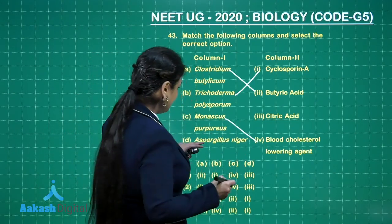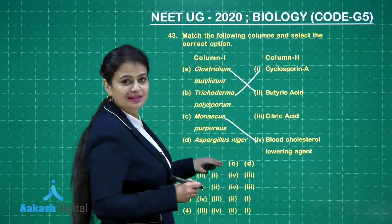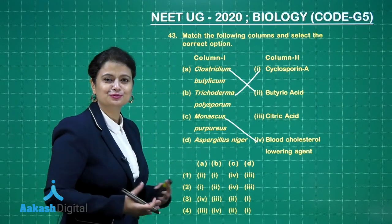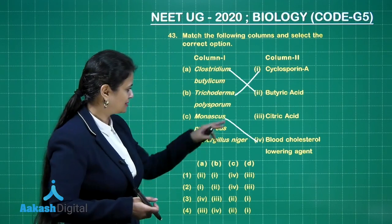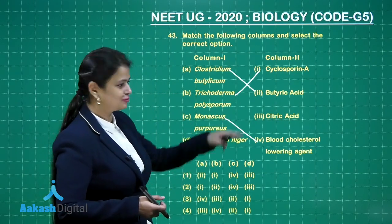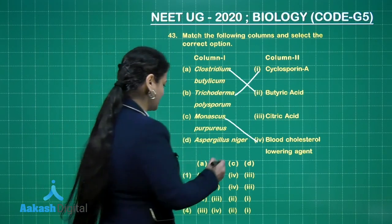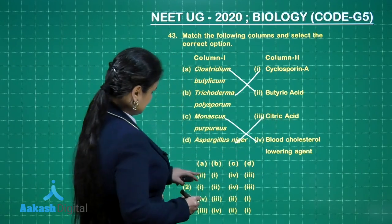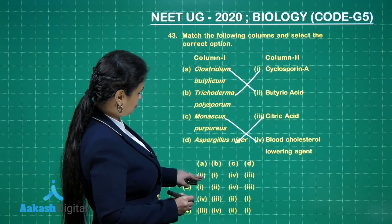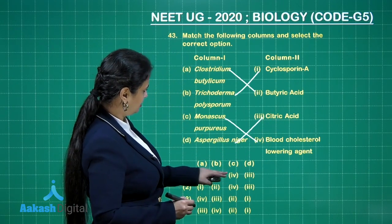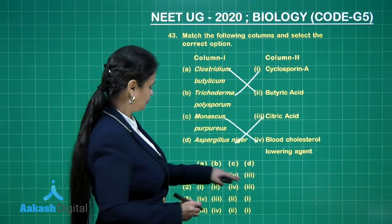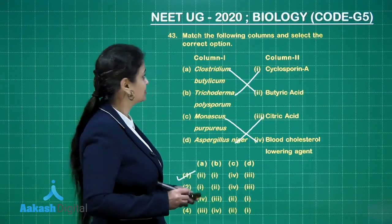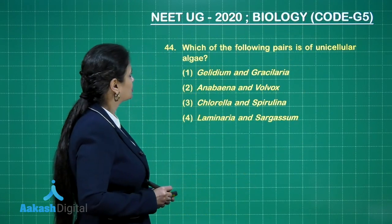Aspergillus niger is a fungus used for forming citric acid. So the correct answer here is 2-1-4-3.